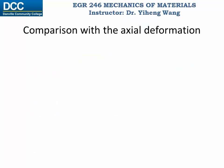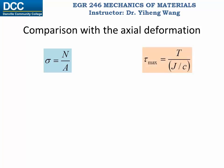If you compare torsional deformation to axial deformation learned earlier, there are many similarities, and hopefully this can help you memorize the equations associated with torsional deformation. The normal stress is defined as normal force over cross-sectional area. The torsion formula can also be rewritten in a similar form, where the numerator T is an internal reaction — the driving force for deformation — and the denominator J over c is the combination of geometric properties of the cross-sectional area.